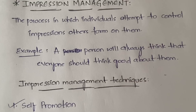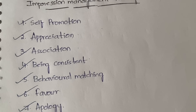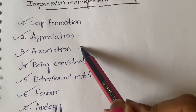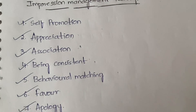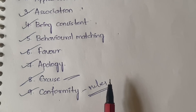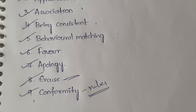So impression management is about controlling the impression others have on you by doing certain things: self-promotion, appreciation, association, being consistent, behavioral matching, doing favors, giving apologies, offering excuses with proper explanation, and conformity — following rules and regulations. I hope this is clear. See you in the next video, and let me know any doubts in the comment section.